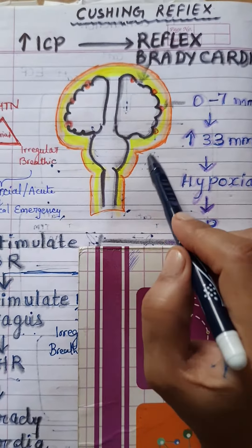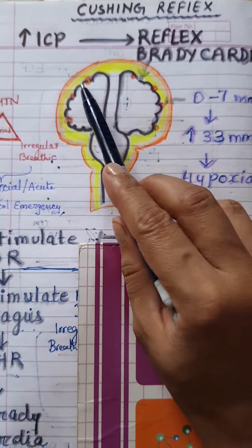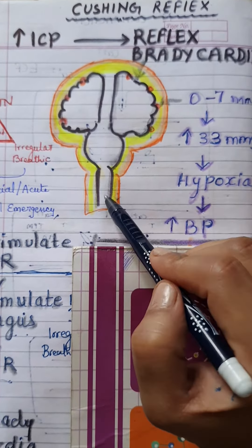To understand the mechanism, first we have to understand this diagram. This is brain, this is brain stem, and this is spinal cord.